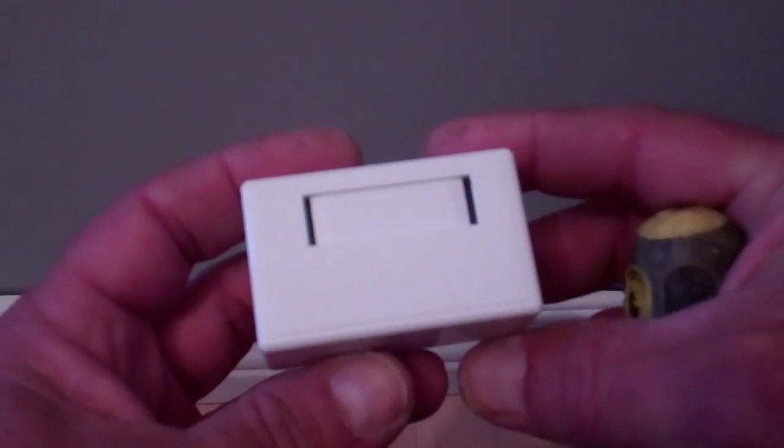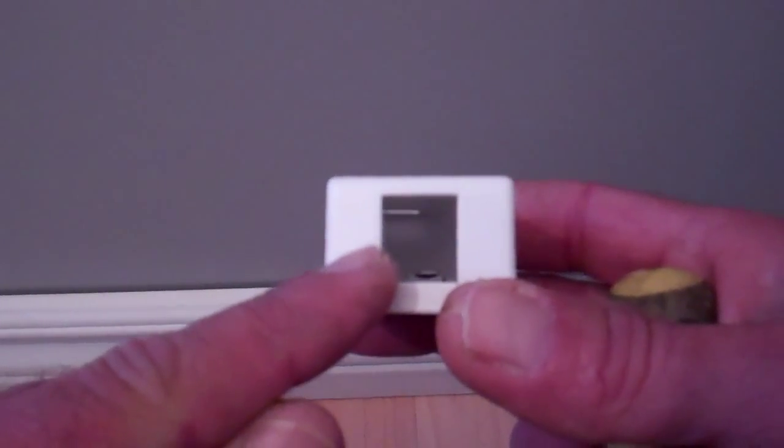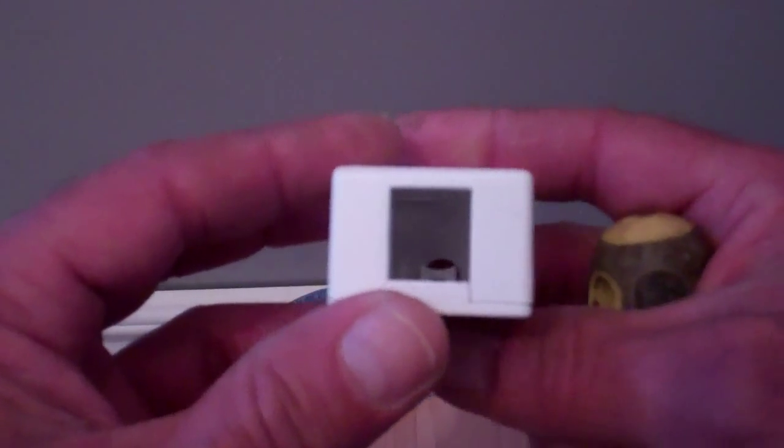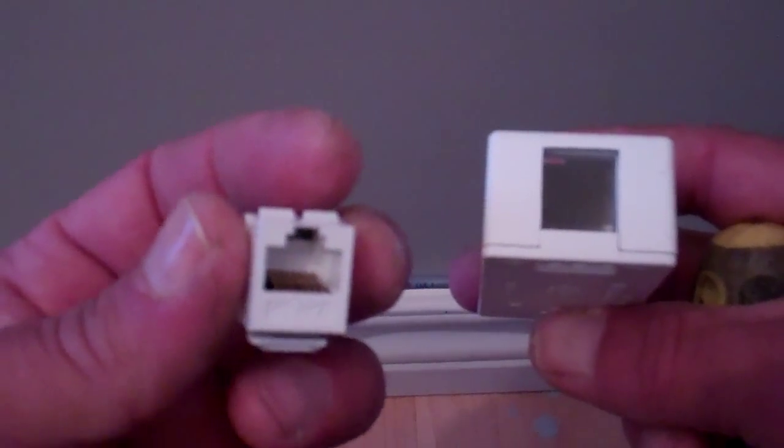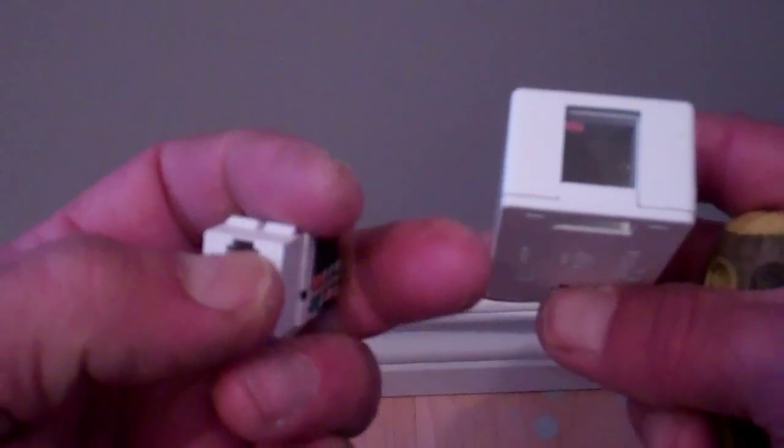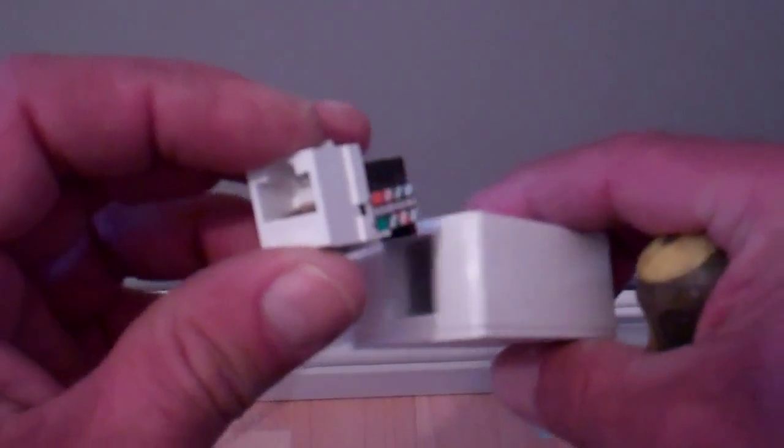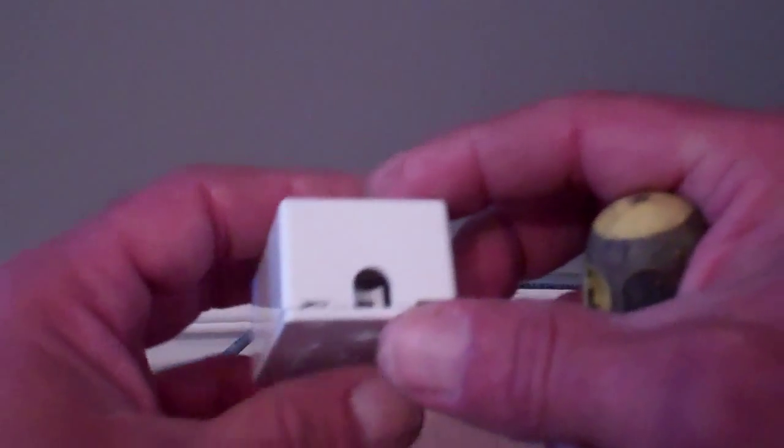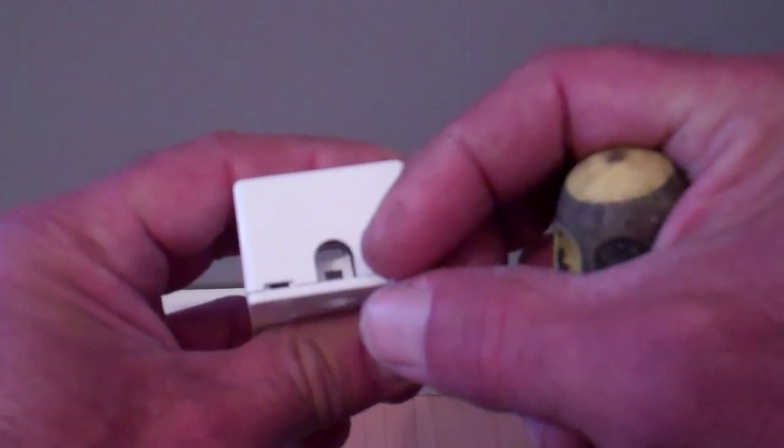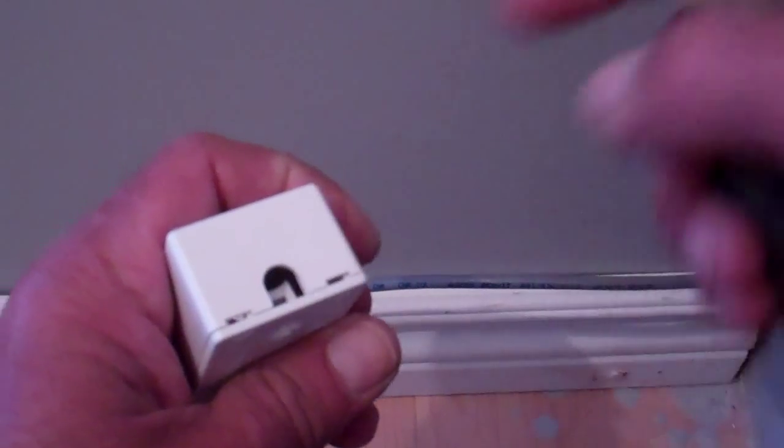If we look at our surface mounted housing here, one end with the big square end is going to be for the Cat 5 cable. As you can see, this has the input for the Cat 5 cable right there and it's going to be in this housing. The other end with the little half circle type end is the end that the Cat 5 cable is going to go into.